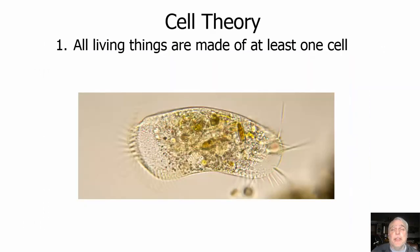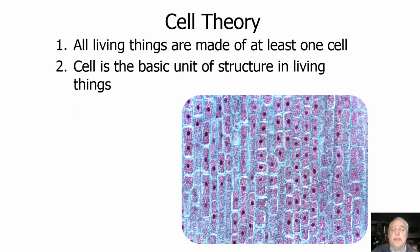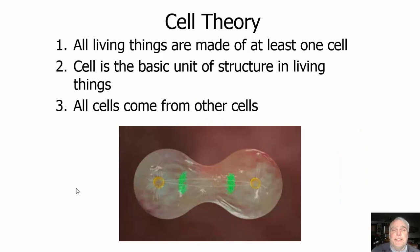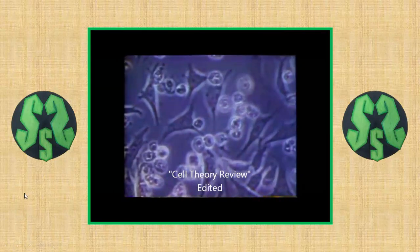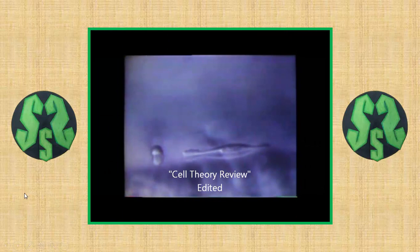First we're going to do a quick review of an important concept: cell theory. There are three parts to cell theory. The first part is that all living things are made of at least one cell. The cell is the basic unit of structure and function of all living things — the basic building block. The final part is that all cells come from other cells. Here's a clip.